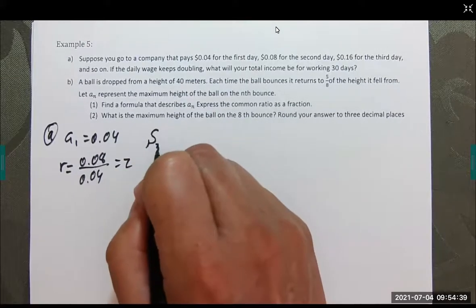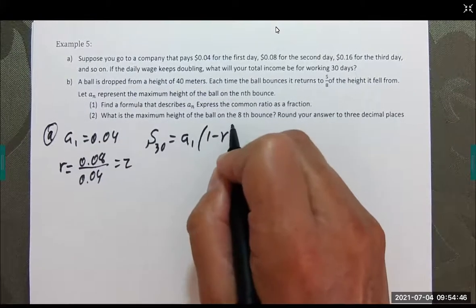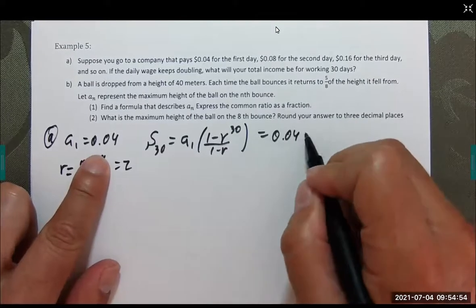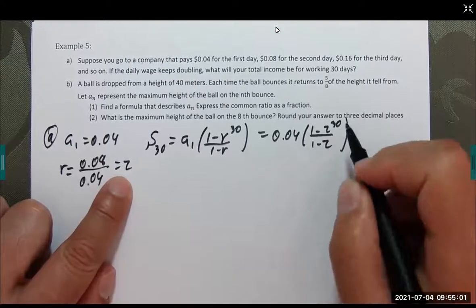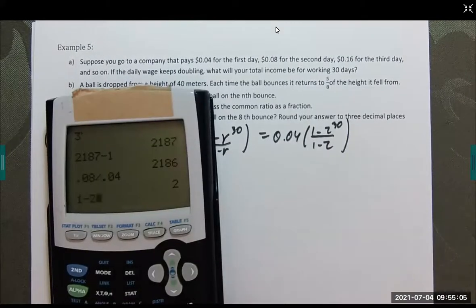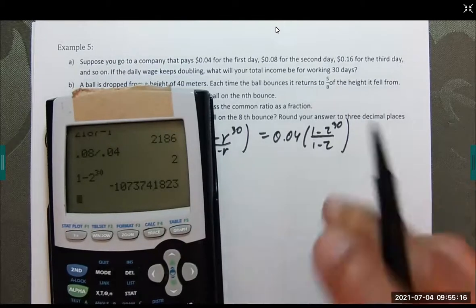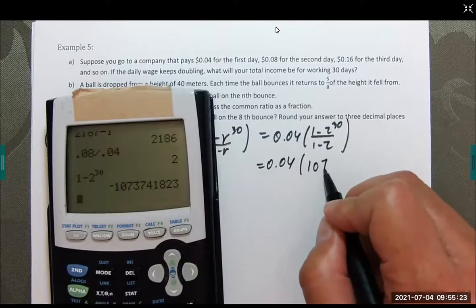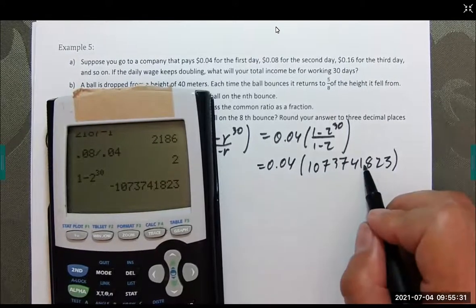We are going to be using the formula S sub 30 equals a sub 1 times (1 minus R to the 30th) over 1 minus R. We know a sub 1 is 0.04, R is 2. 1 minus 2 to the 30th, this is going to be a crazy big number. 1 minus 2 to the 30th, that is an enormous number. That's going to be divided by negative 1. That's a positive 1,073,741,823 because negative divided by negative is positive.